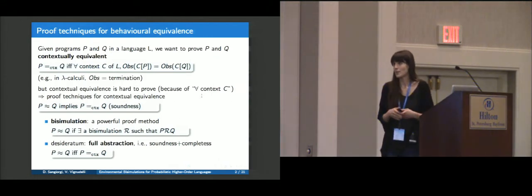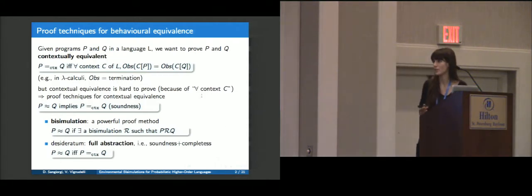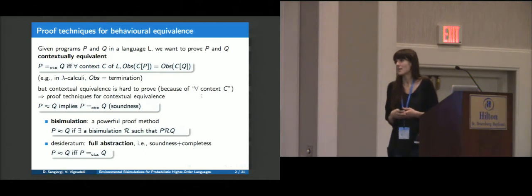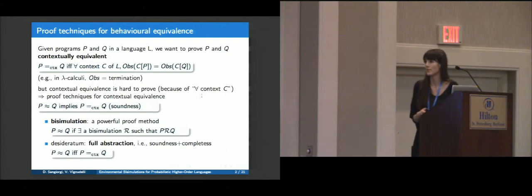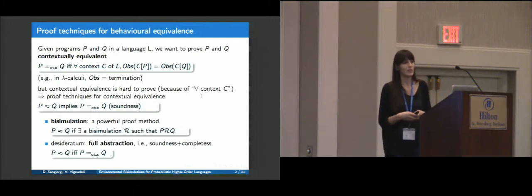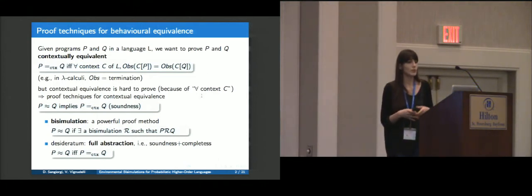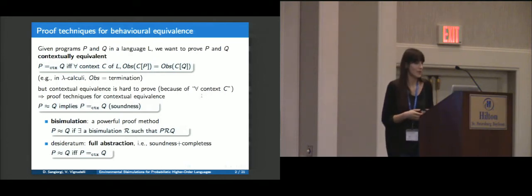What does it mean? That when we take these two programs and put them in the same context, we want to have the same observation. For instance, in lambda calculi, as an observation, we take termination, but it really depends on the language. However, there is a big downside in that contextual equivalence is generally hard to prove because we have this universal quantification over a context, and so we are interested in developing proof techniques that are sound with respect to it.